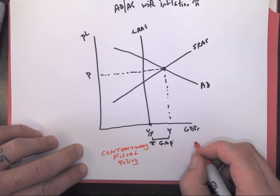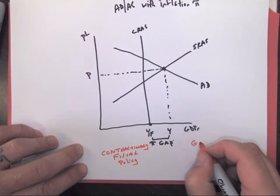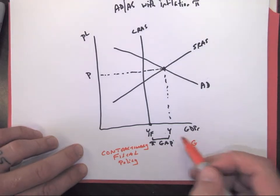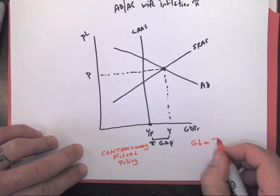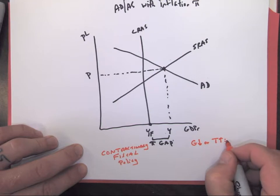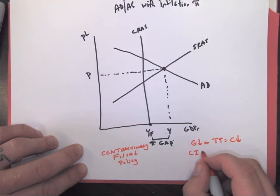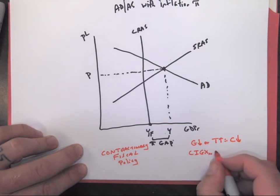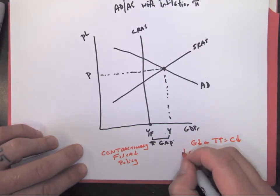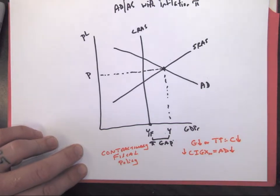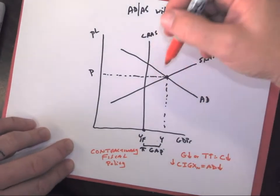Those tools of policy are enacted by Congress. They can do government spending, so we'd want to slow down GDP by decreasing government spending, or we can raise taxes which would lead to consumption decreasing. Remember any time we have our aggregate spending equals aggregate demand, if one of these goes down, that one would have to decrease.